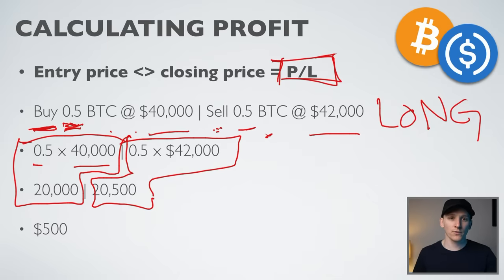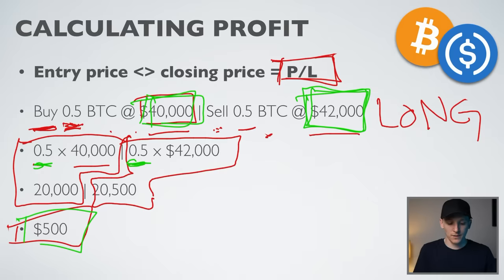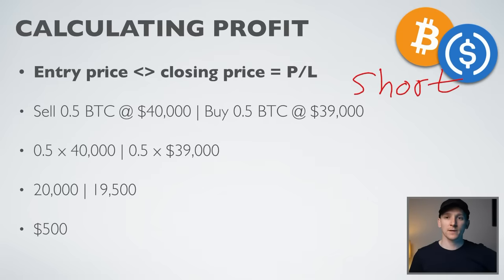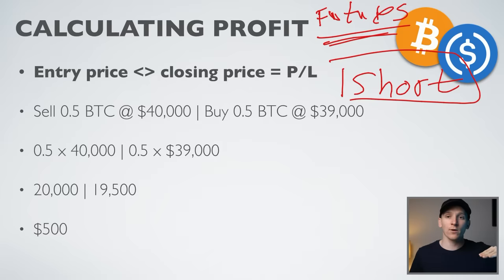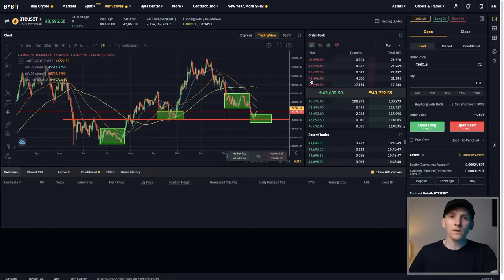That's a long example. For a short example: when you go short, you sell first hoping the price comes down, then buy back later. You can only short sell with futures — one of the key benefits of futures trading is that you can bet on the price going down without having any assets to begin with. So if you think Bitcoin's price will come down, you can short sell on a futures contract — sell now and buy back later.